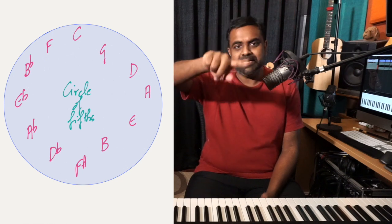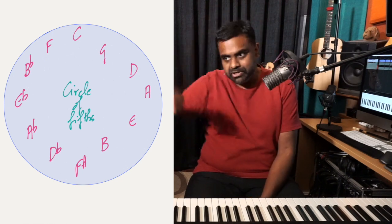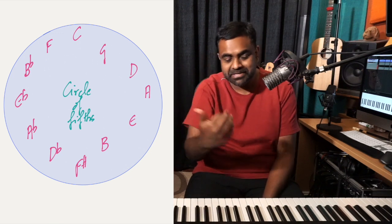C, G, D, A, E, B, F sharp, D flat, A flat, E flat, B flat, F and C. You have to write it that way. Then you have to also remember it that way. Then you can get a lot of these charts and stick it in your house. I'm sure some of you even have it, right?